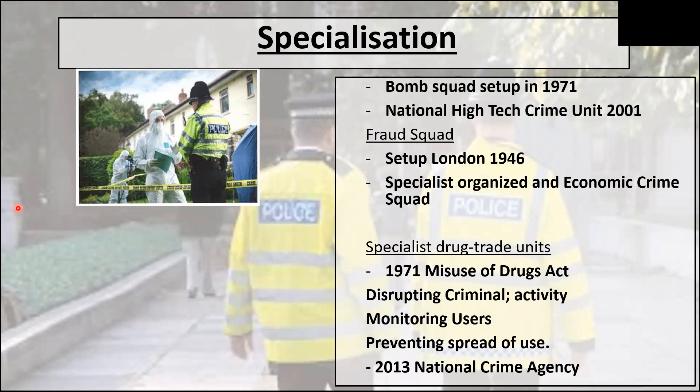One of the hot topics at the moment is county lines. Essentially, various drug dealers have sought to circumvent the special drug units by dealing across counties and using young people to carry out that dealing across counties. County lines is currently one of the key things that police are working hard on.